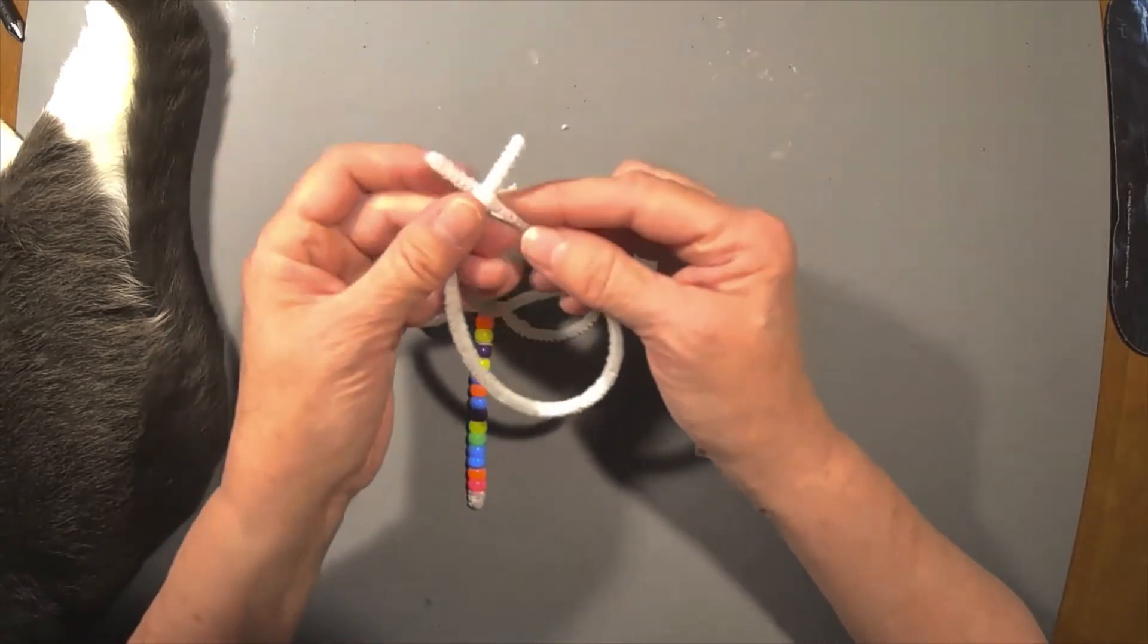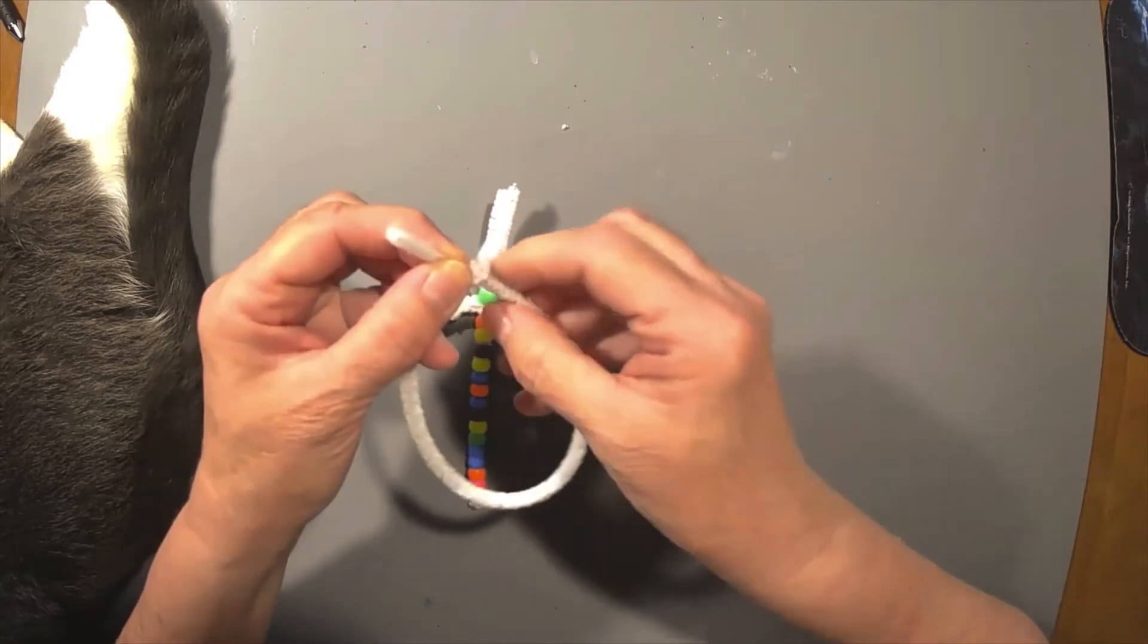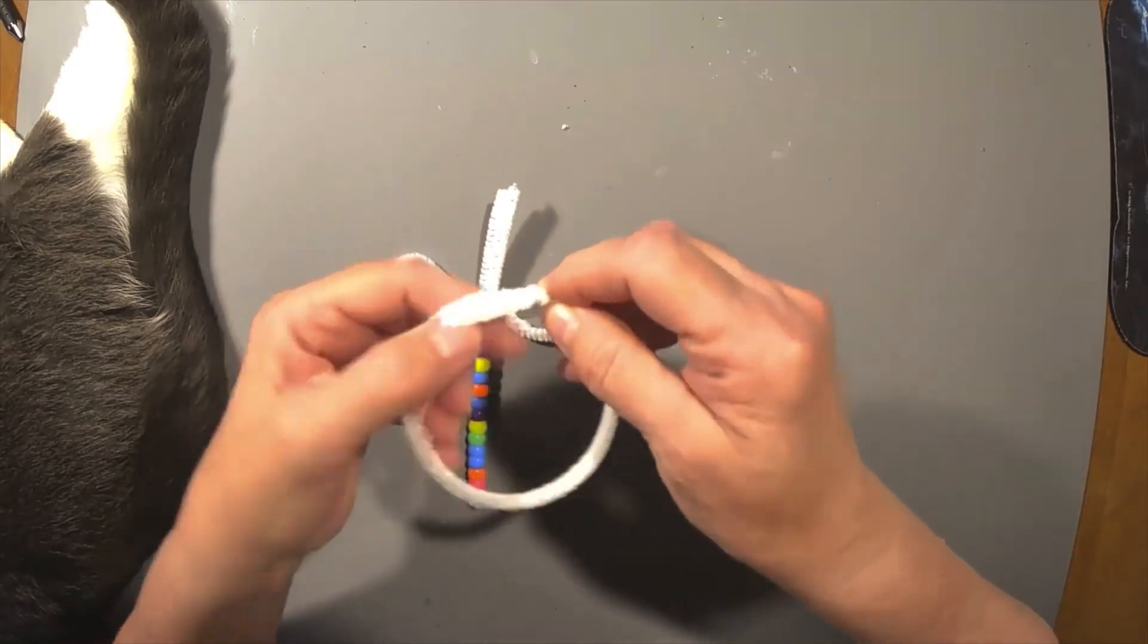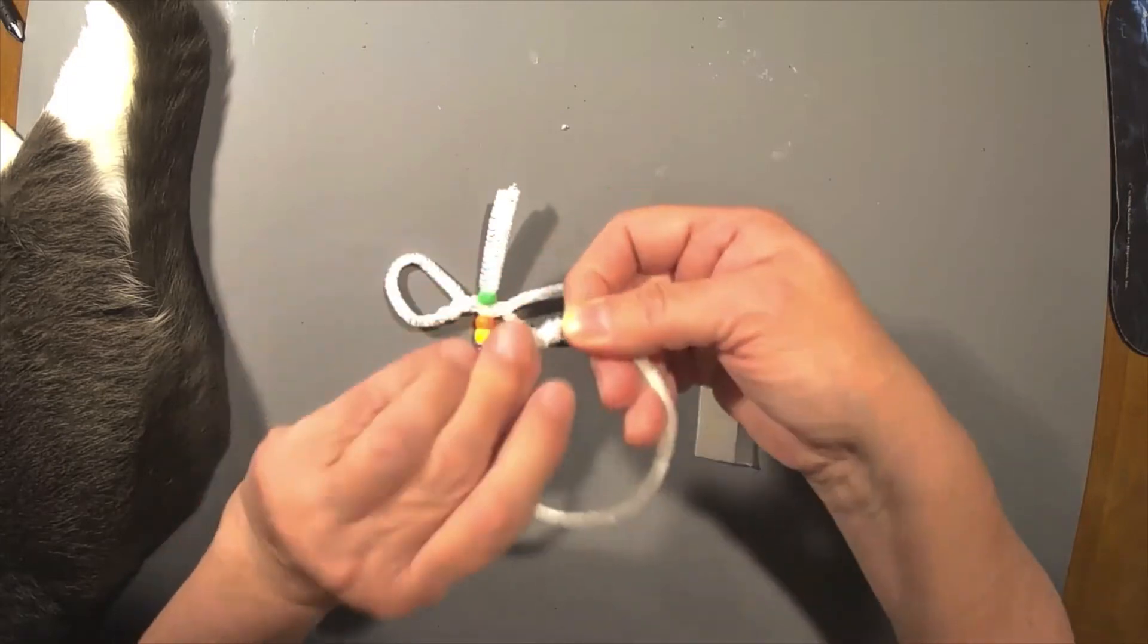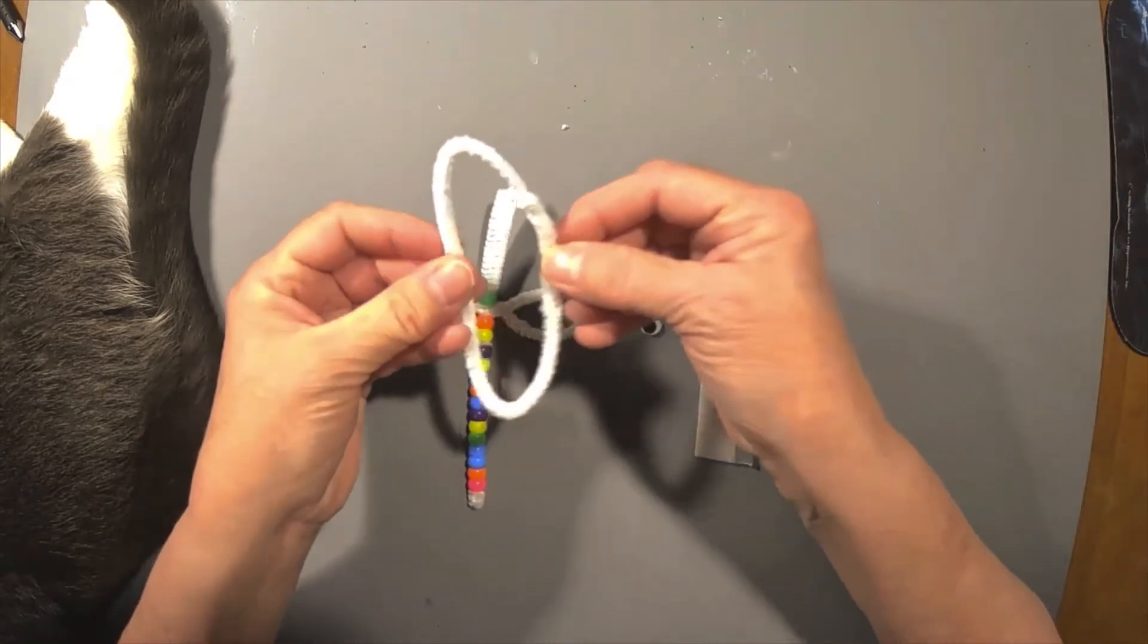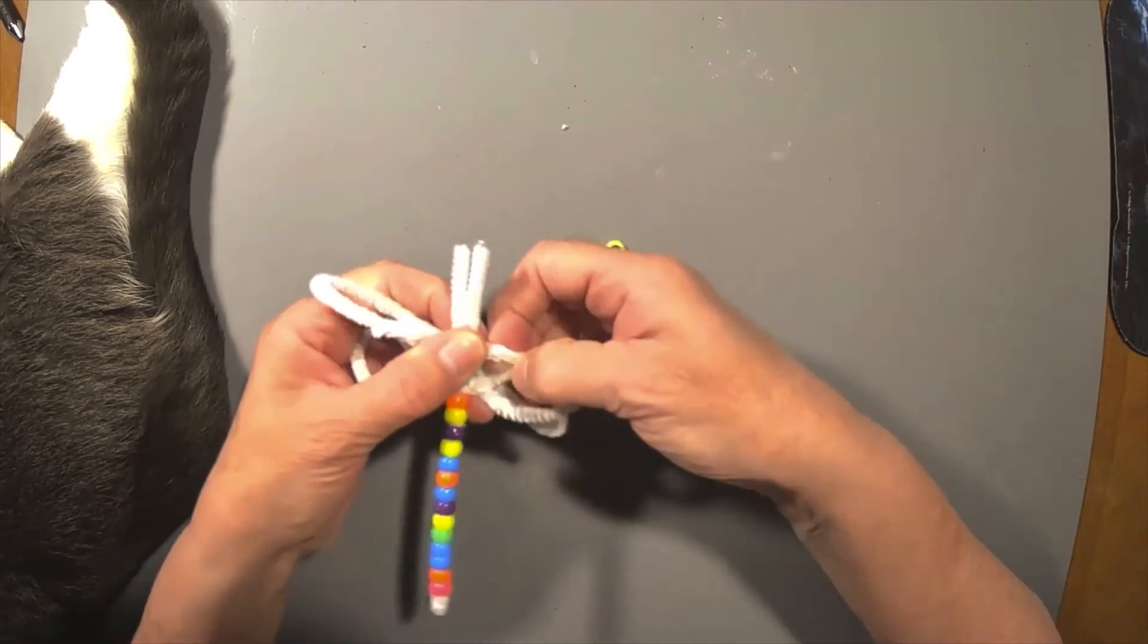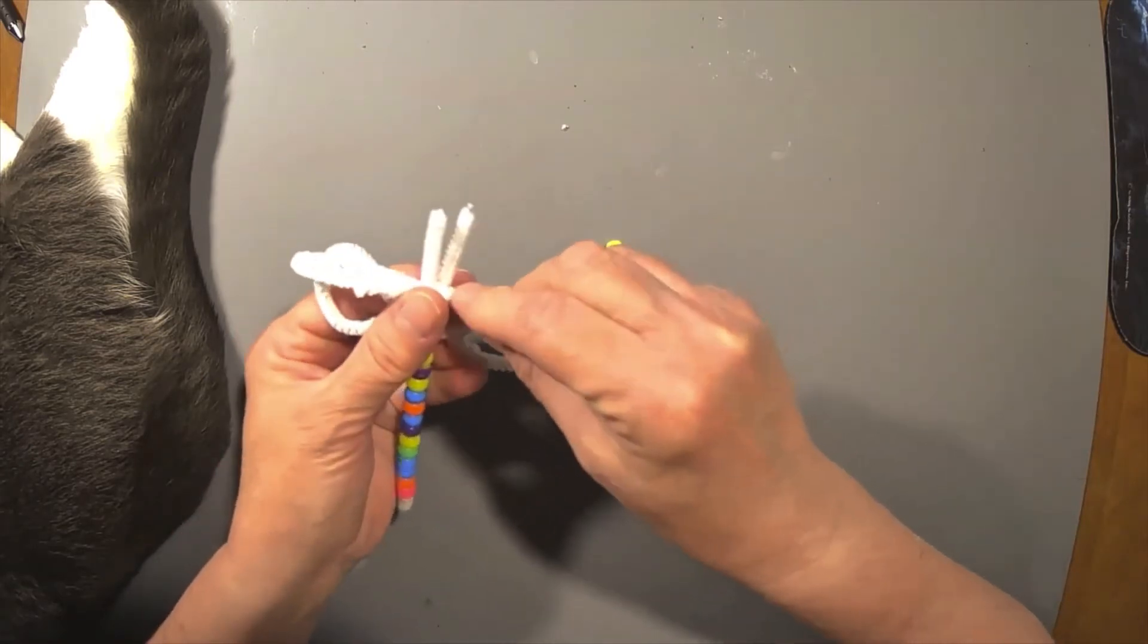Then we're going to do the exact same thing again with the other pipe cleaner. We're going to fold it around on one side and bend the other end around the other side so that they're nice and tight. You're going to do the same thing. Push them together and put them over the ends up next to that bead. Then twist it two or three times to make it tight on the dragonfly's body.